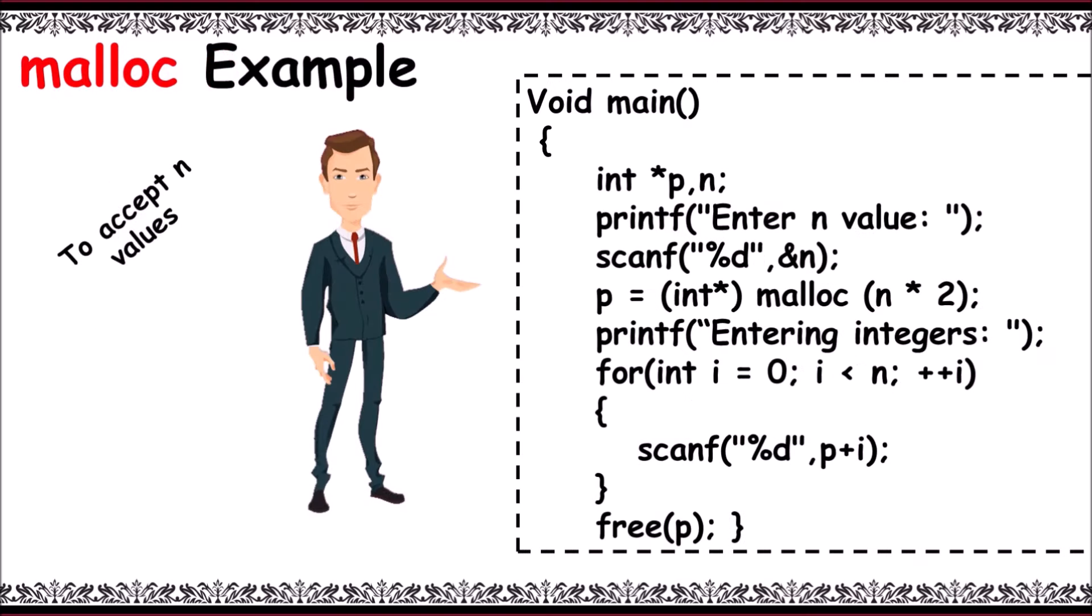Now let's have an example program on malloc to accept n values. Main: declare pointer variable and n. Enter n value, read 3 using scanf. Now let's allocate memory for 3 variables using malloc. That is, p equals int asterisk malloc of n into 2. N is 3 here. Entering 3 values starts. i equals 0.